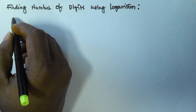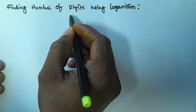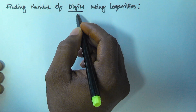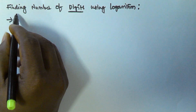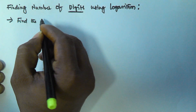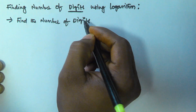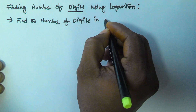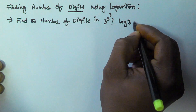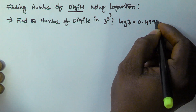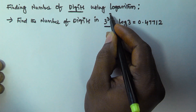Hello friends, in this video we will see an application of logarithm — that is, finding the number of digits in a given value using logarithm. For example, find the number of digits in 3 to the power of 3 to the power of 3, where the log 3 value is given as 0.47712.